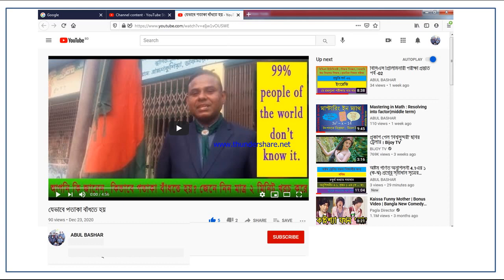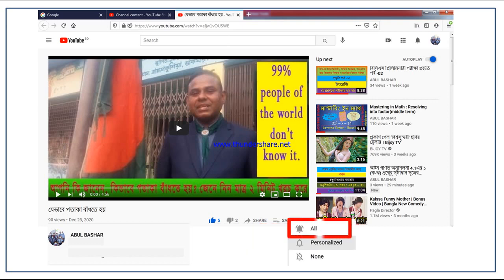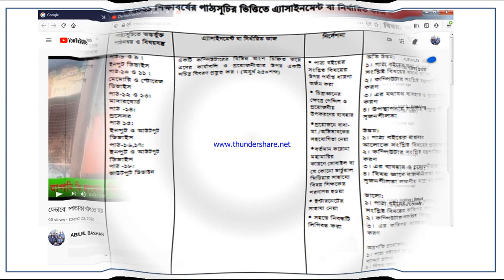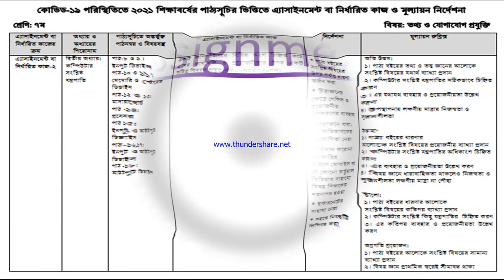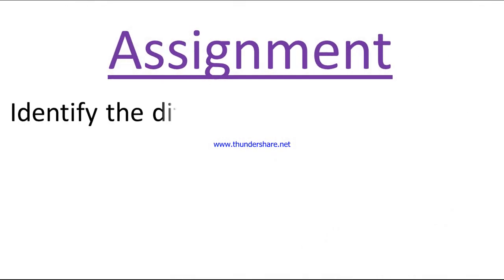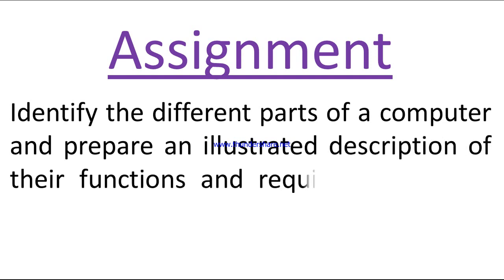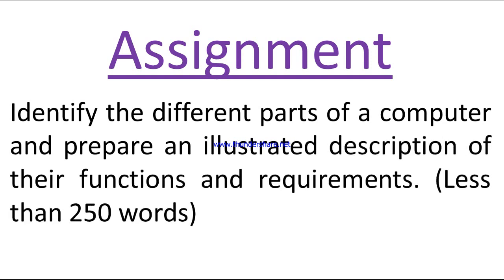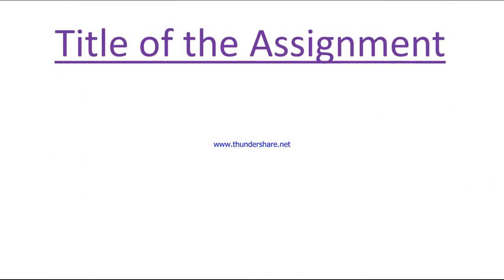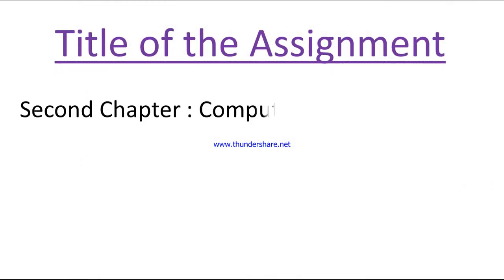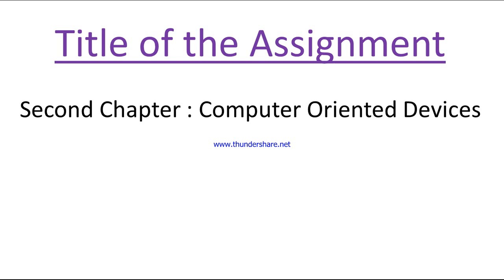Click on the subscribe button below the video, then click on the bell icon, and then click on the option 'All'. Let's see the assignment: identify the different parts of a computer and prepare an illustrated description of their functions and requirements, less than 250 words. Title of the assignment: second chapter — computer-oriented devices.